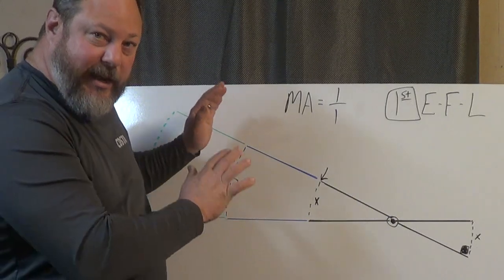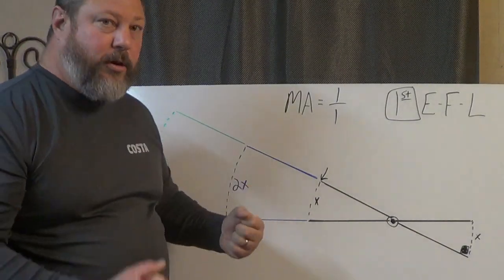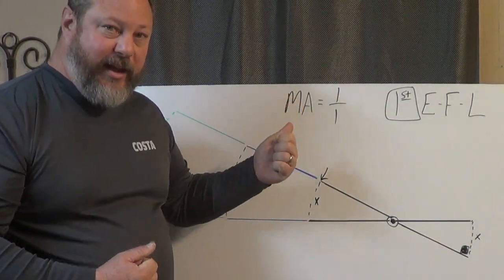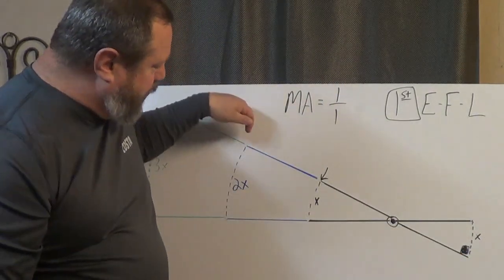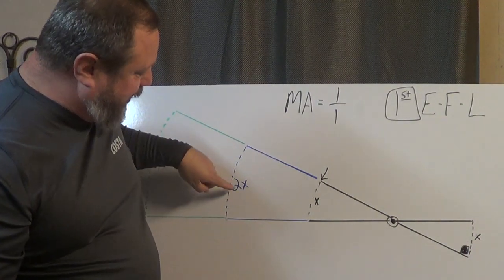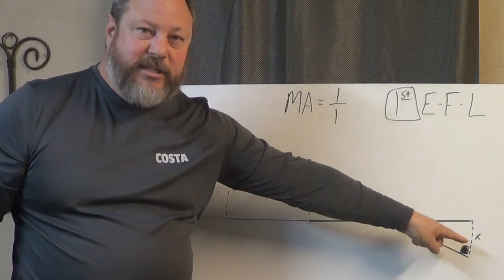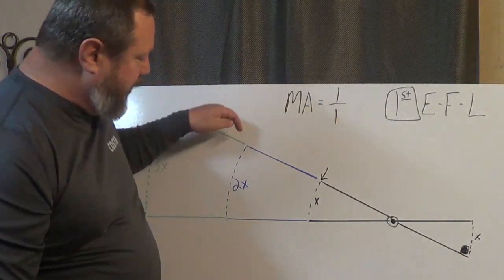The load arm is still the same. What I have literally done here in terms of the mechanics and the physics is I have traded distance for that mechanical advantage. So now if that still weighs 100 pounds, I can put a 50 pound force on here, but my 50 pound force is going to travel twice the distance that my load is going to travel.